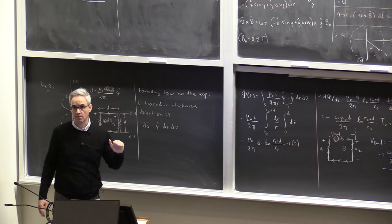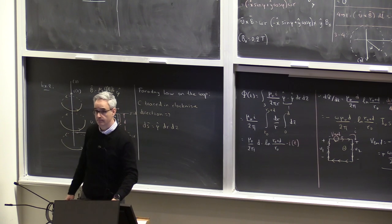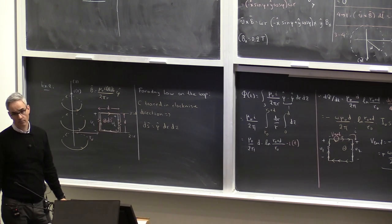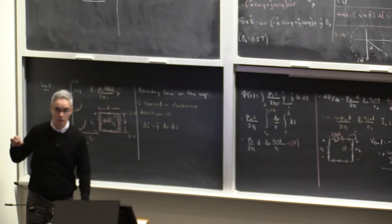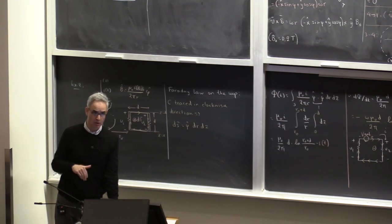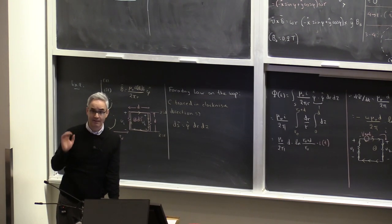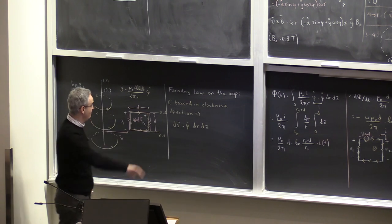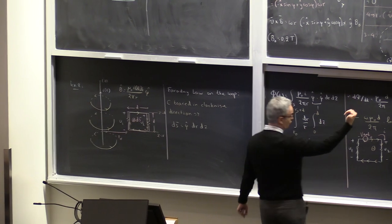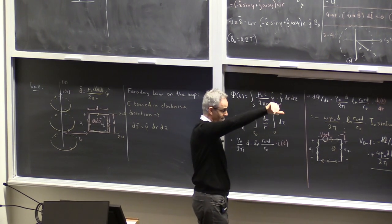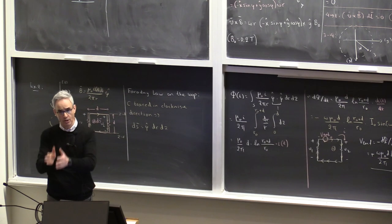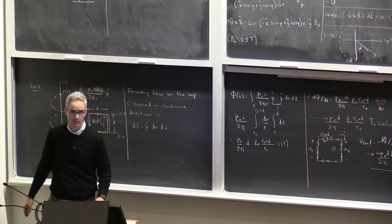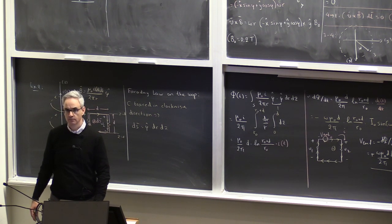A student asks whether the DS direction was assumed. No - when tracing the loop clockwise, DS is determined by the right-hand rule, pointing inwards. If traced counterclockwise, DS would point outwards. You are free to choose the tracing direction, but once chosen, DS must be consistent with the right-hand rule. The tracing direction is a layout choice, but DS follows from that choice.